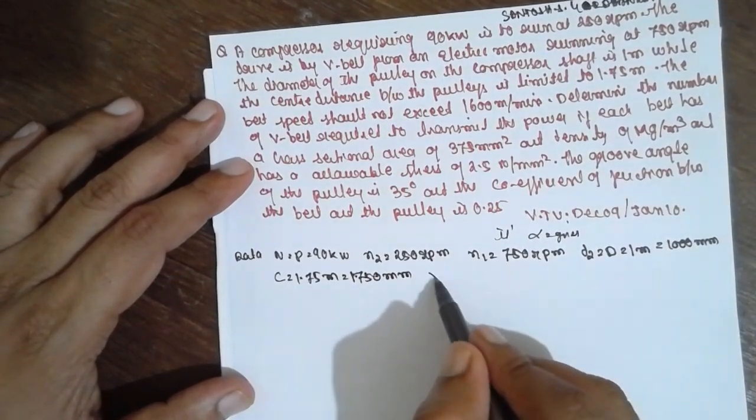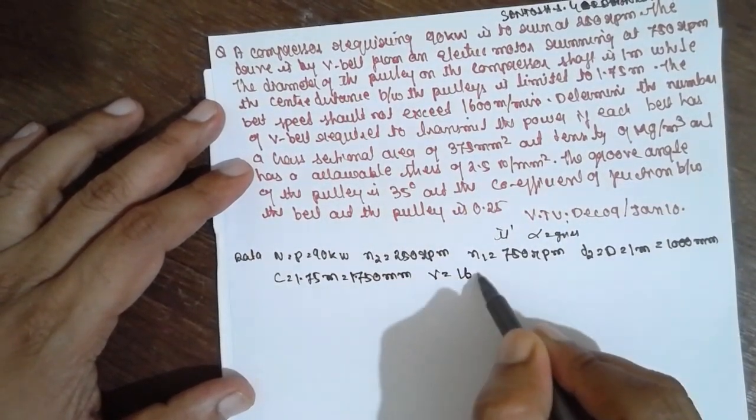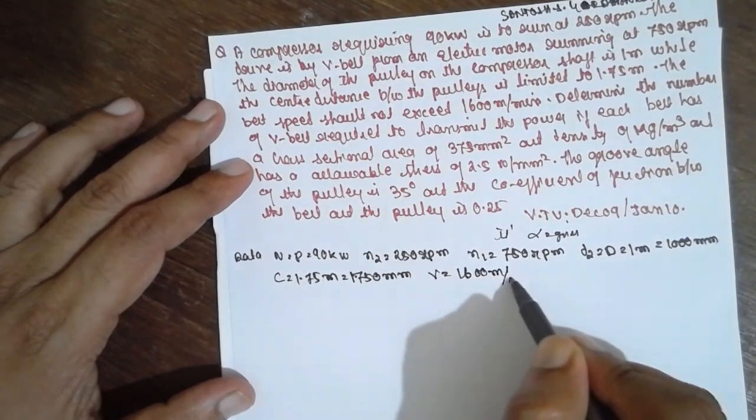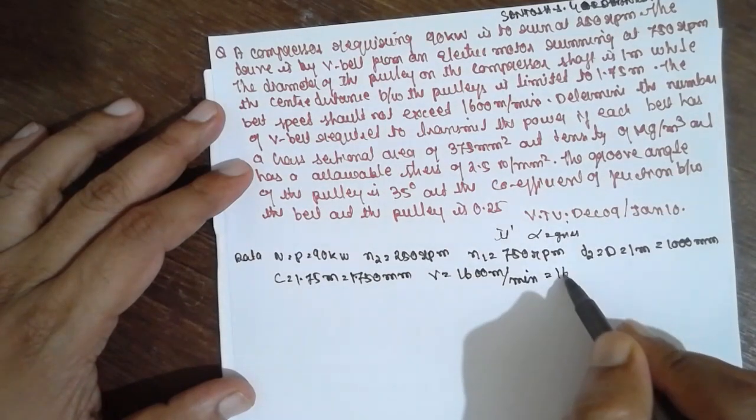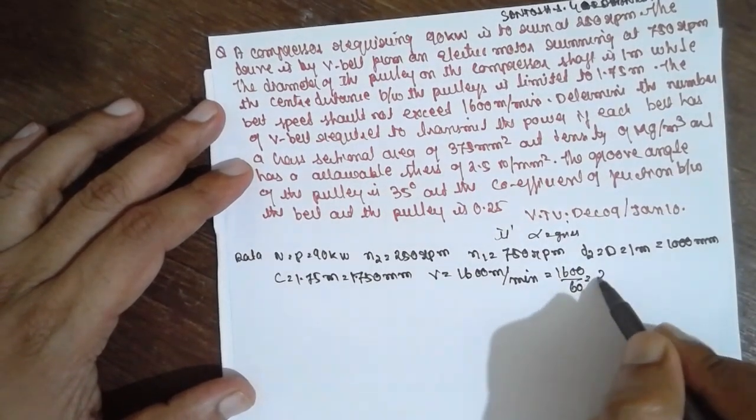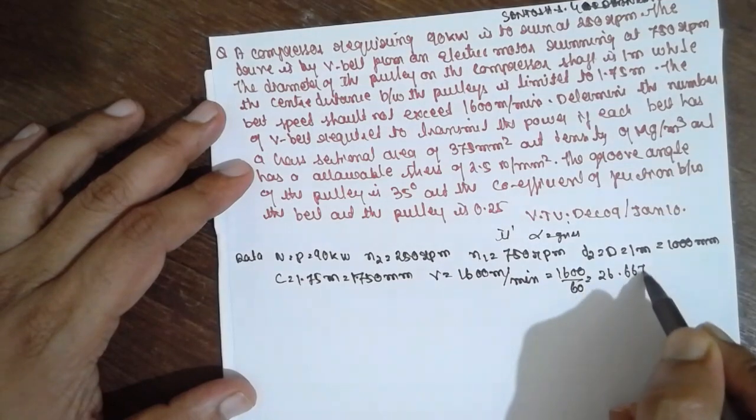Velocity they have given 1600 meter per minute. Have to convert into meter per second: 1600 divided by 60 equals 26.667 meter per second.